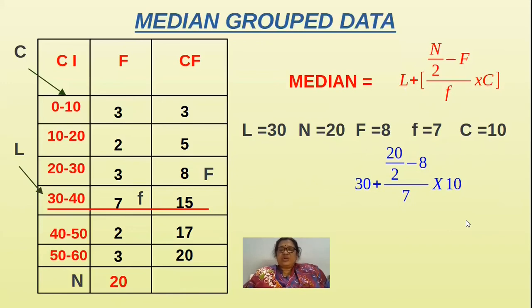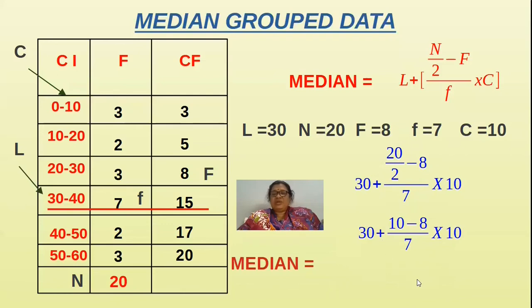Most of the students will make an LCM for 2 and subtract this operation. I will tell an easy method. First you have to cancel these two, two ones, two tens. You will get 30 plus, here you will get 10 minus 8 by 7. The median will be 10 minus 8 into 10, that is 20. 10 minus 8 is 2, 2 into 10 is 20, 20 by 7.